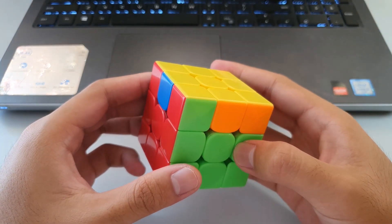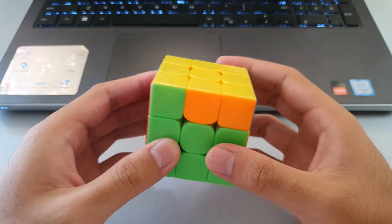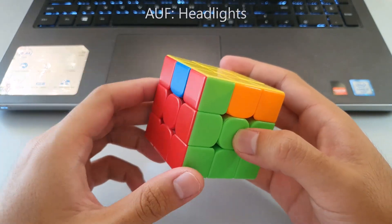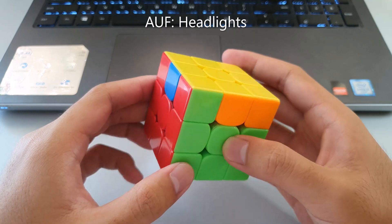The AUF for the G perms is actually surprisingly easy, and that's just to look at the headlights. And yes, that does work for all four of the G perms.